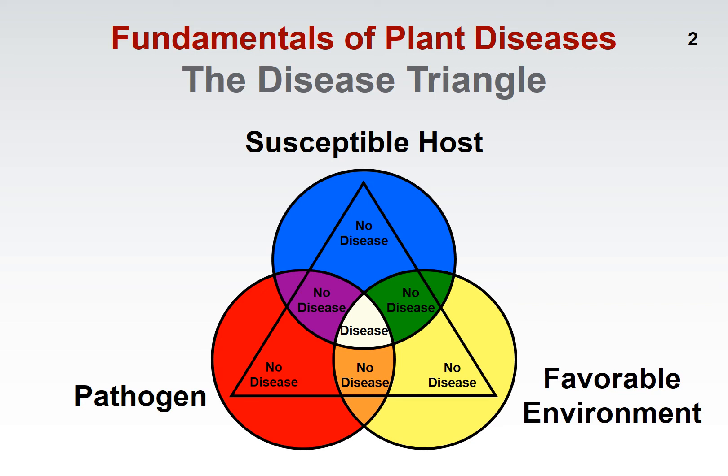That's one technique to make the susceptible host corner less important in the triangle. The other thing sometimes we have to recommend is simply not to grow a particular plant, because in certain situations it's just a losing battle — you're better off growing some other plant rather than the one you'd really prefer but that is really prone to disease. Now let's move over to the pathogen corner of the triangle. How can you get rid of pathogens? By the end of the talk you're going to think pathogens are everywhere, but there are methods to make this corner less important.